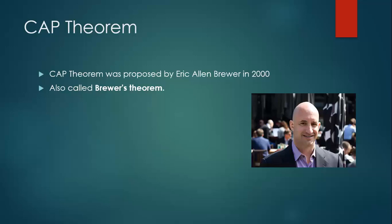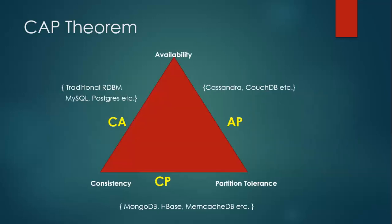As per Brewer, the CAP theorem states that in a distributed system, you can only have two out of the three guarantees: consistency, availability, and partition tolerance — one of them must be sacrificed. It means that in order to get both availability and partition tolerance, you have to give up consistency.